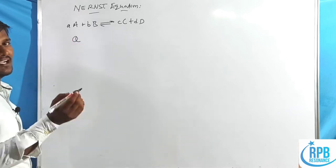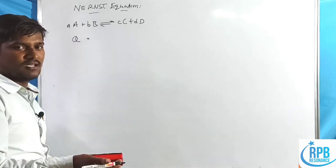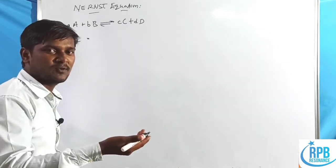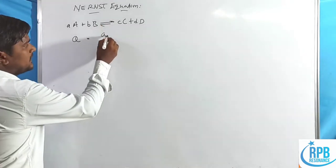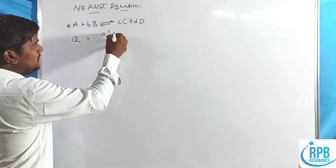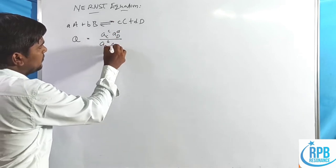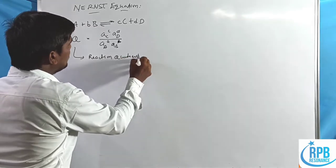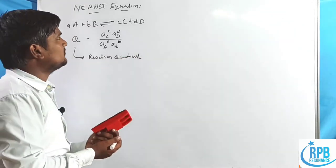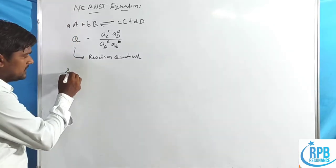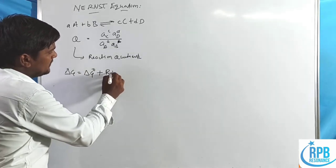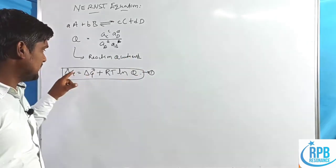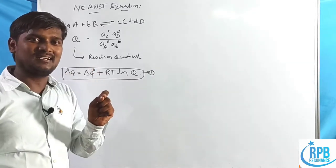From thermodynamic terms, the reaction quotient Q is approximately equal to the equilibrium constant. Q is defined as the activity of products by the activity of reactants: Q = [C]^c[D]^d / [A]^a[B]^b. The thermodynamic equation gives: ΔG = ΔG° + RT·ln(Q), where Q is the reaction coefficient.